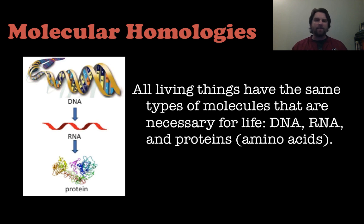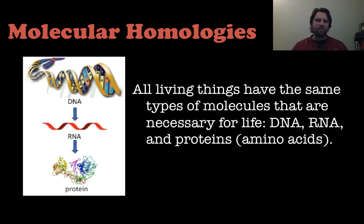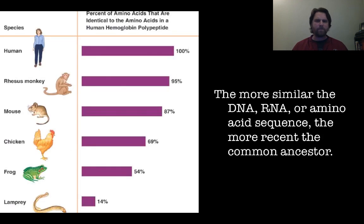First, molecular homologies: all living things have the same types of molecules necessary for life — DNA, RNA, and proteins made of amino acids. DNA is transcribed into RNA, which is then translated into proteins, and all living things share that same characteristic. The more similar the DNA, RNA, or amino acid sequence, the more recent the common ancestor was.